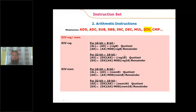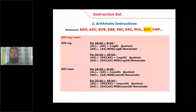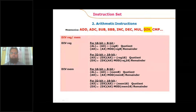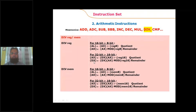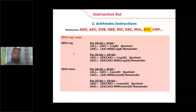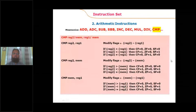For 32-bit ÷ 16-bit division, the 32-bit value is in DX:AX and the 16-bit divisor is in a register or memory. The 16-bit quotient goes to AX and the 16-bit remainder to DX. DIV is used for unsigned data values; IDIV is used for signed data values. The CMP (Compare) instruction compares two values by performing subtraction but does not store the result; it only affects the carry flag, zero flag, and sign flag.